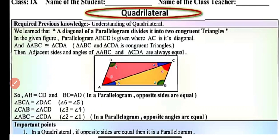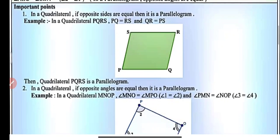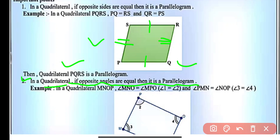Now we have some important points. In a quadrilateral, if opposite sides are equal, then the quadrilateral will be called a parallelogram. So here in quadrilateral PQRS, we have PQ equals RS and QR equals PS. Therefore the quadrilateral PQRS is a parallelogram.